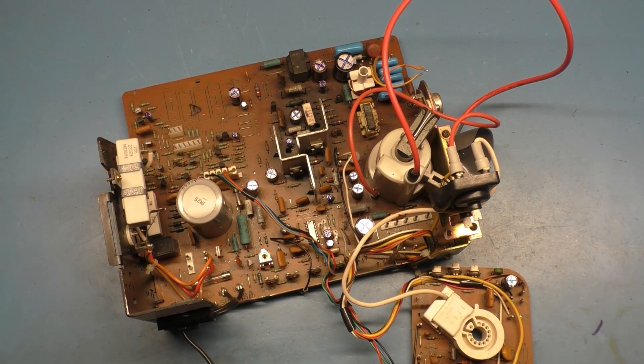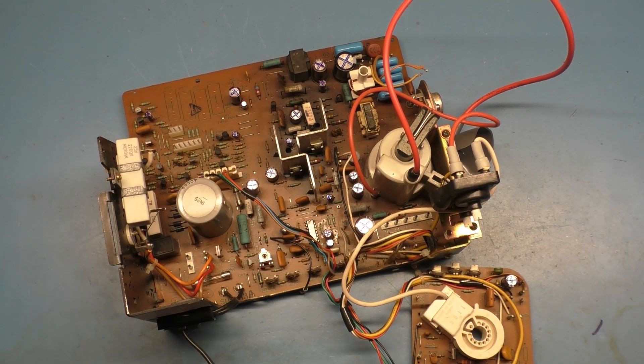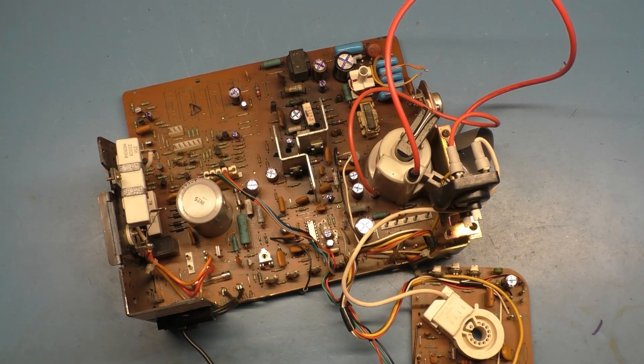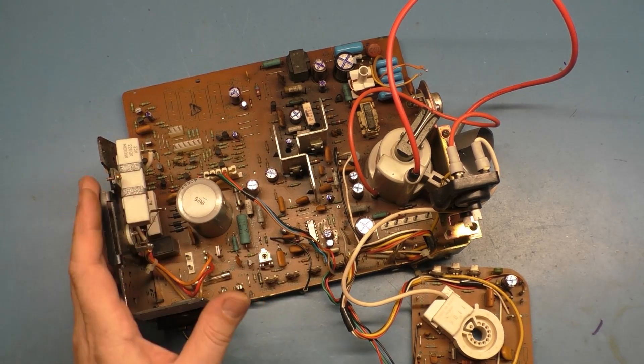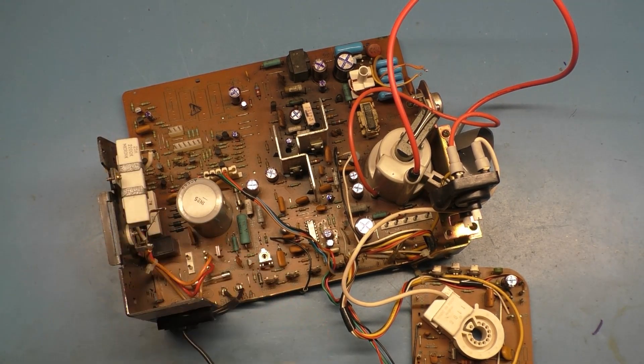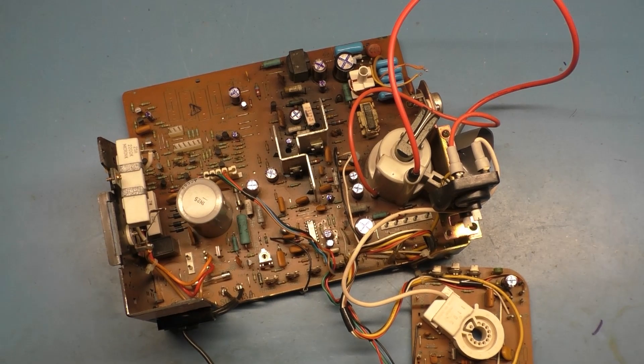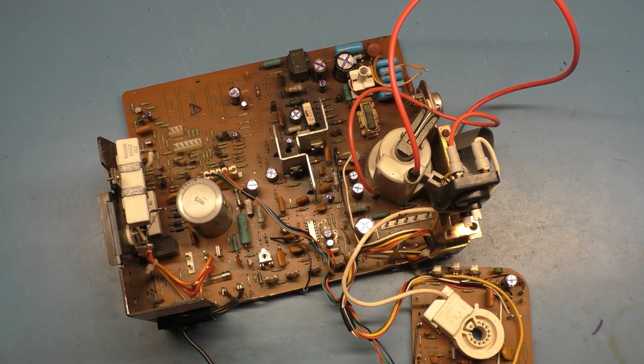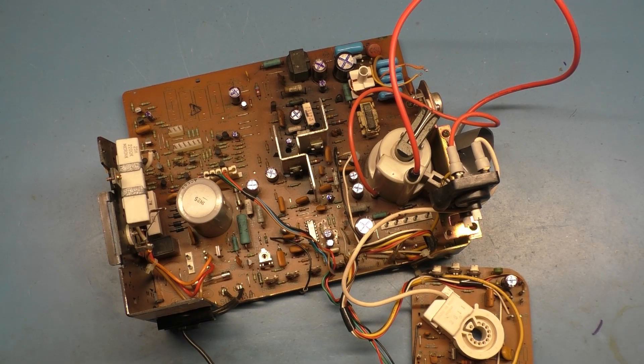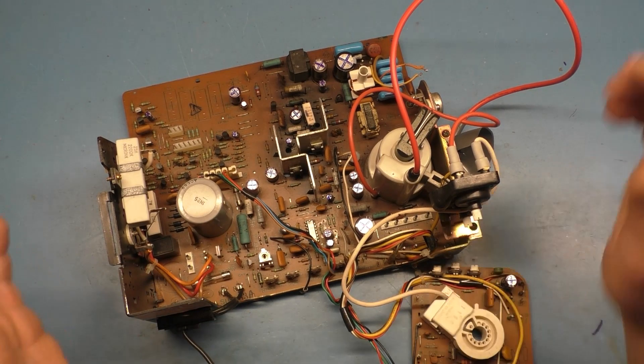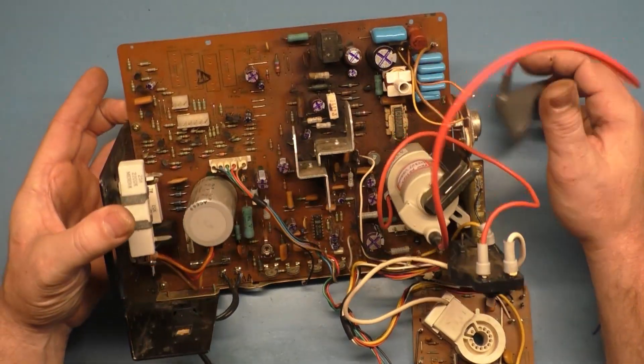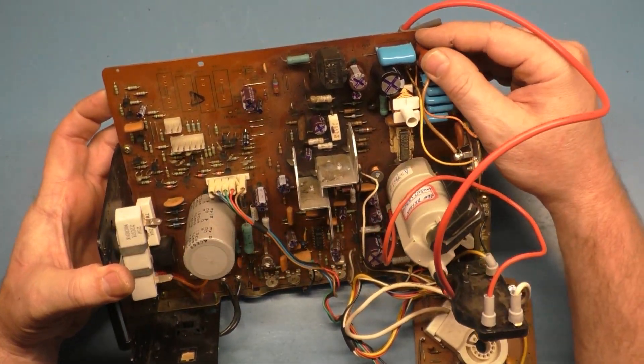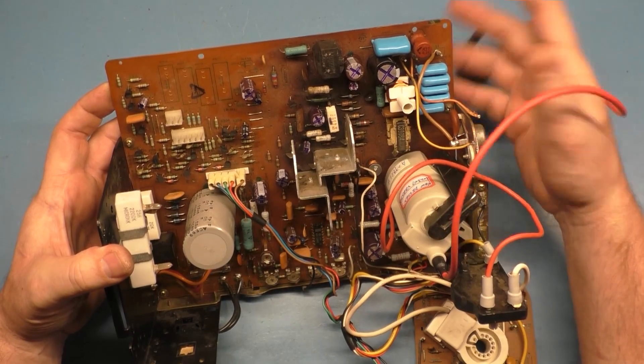All right, so today we have a 19-inch G07 CRT that was brought down to me from the arcade up in Fort Smith, Arkansas. The owner, Stephen, brought down a dozen chassis for me to work on. He was coming down here to Wichita for some reason, and when he came down to visit, he brought me about a dozen chassis that he needs worked on. I was like, well, okay, I'll take a look at them.